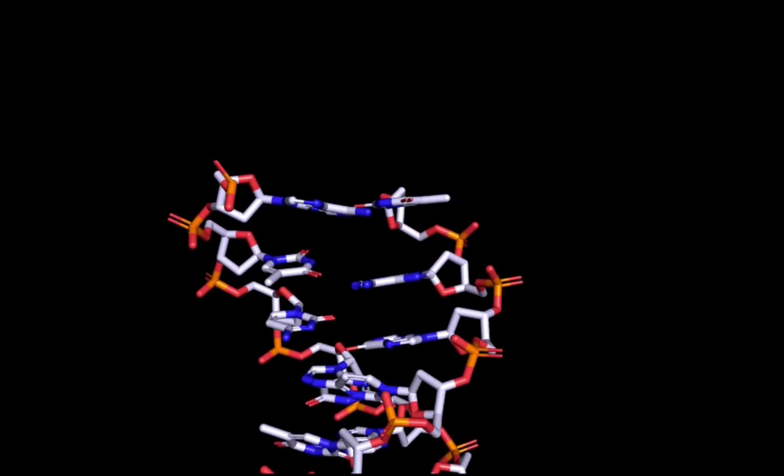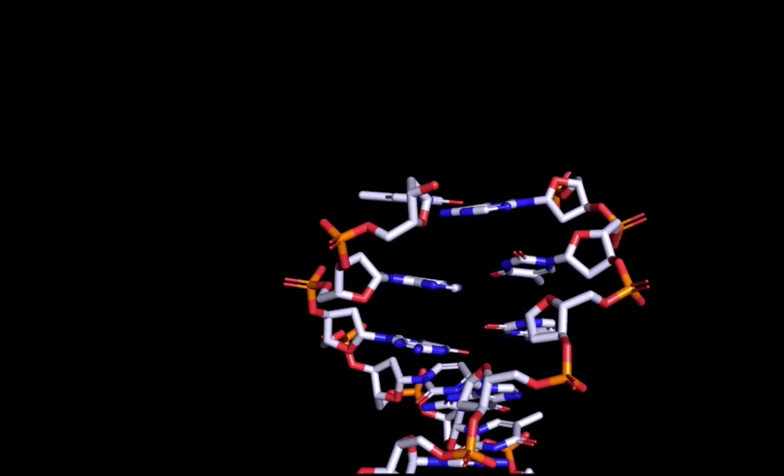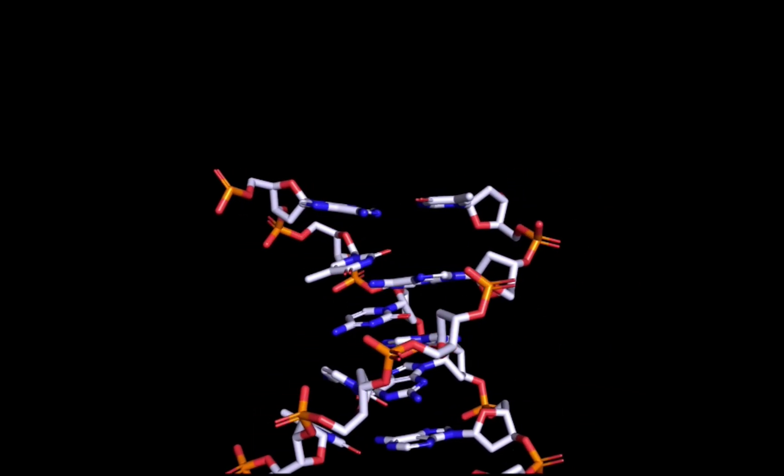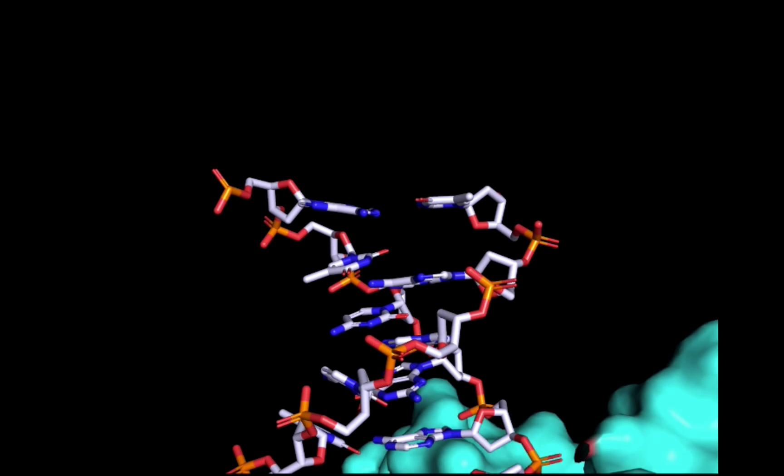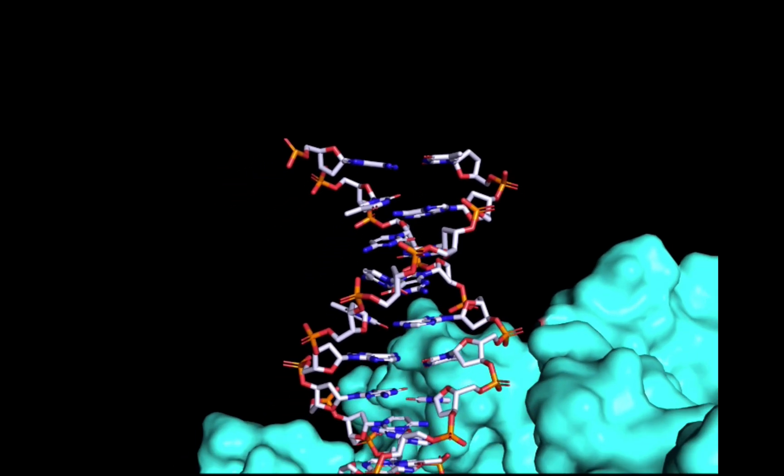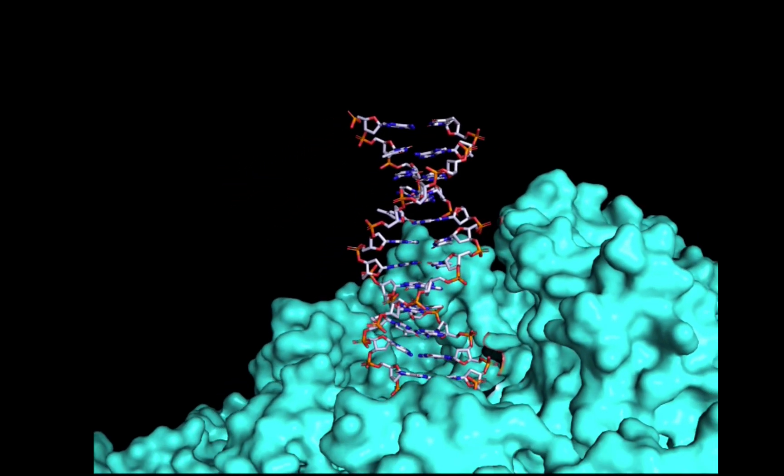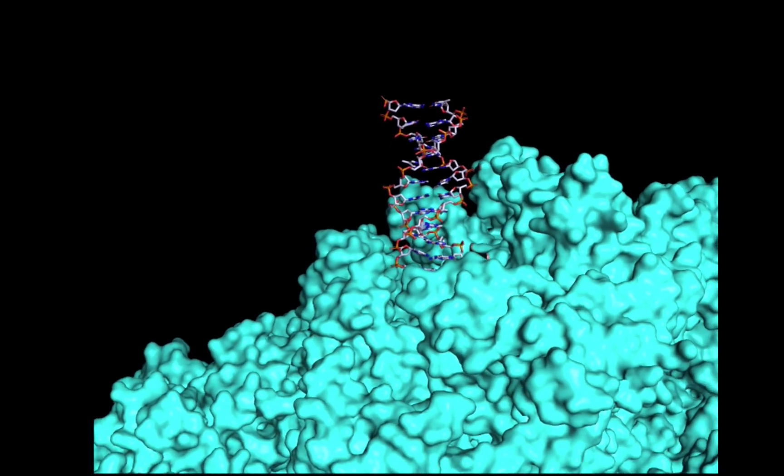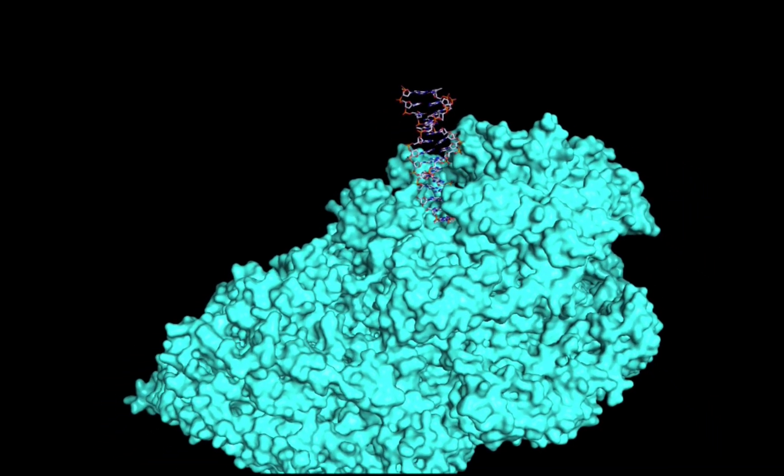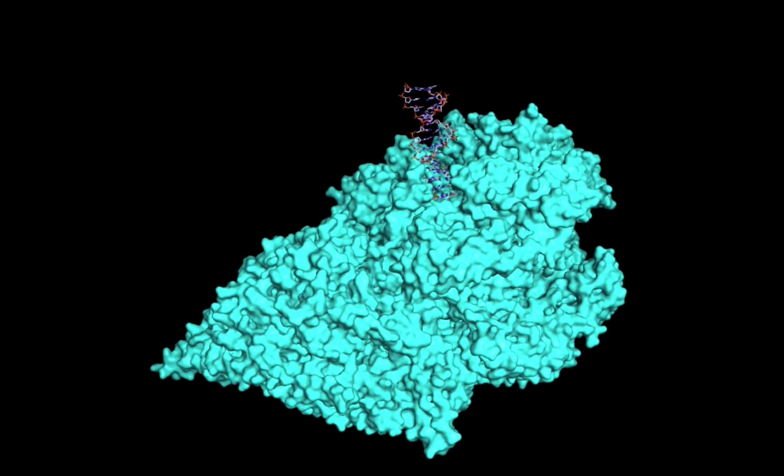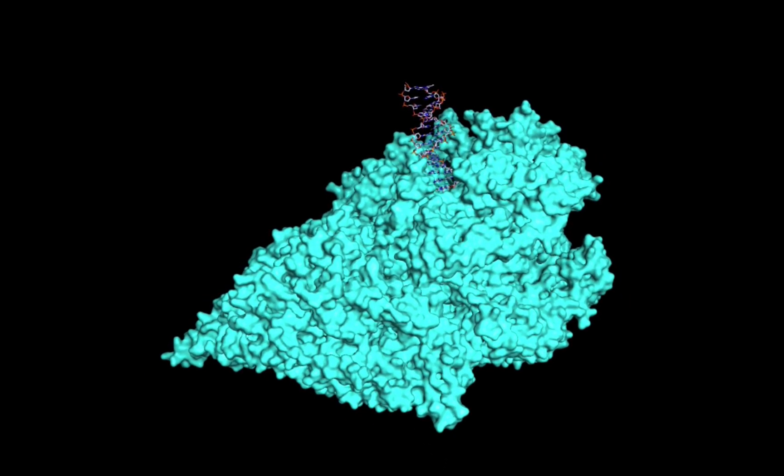In order to make new cells to grow or replace dead cells, the entire strand of DNA needs to be copied. To do this, the double helixes unzip by enzymes, and an exact copy of each strand of DNA is made before the cell divides up with perfect copies of the genetic material in each cell.